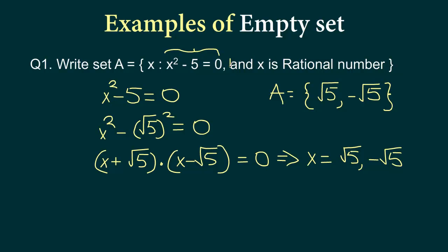It is this, and we have two conditions, and this is our second condition that x is a rational number. So it has to satisfy both the conditions. Now are any of these numbers rational numbers? They both are irrational numbers, and hence our set actually is an empty set.